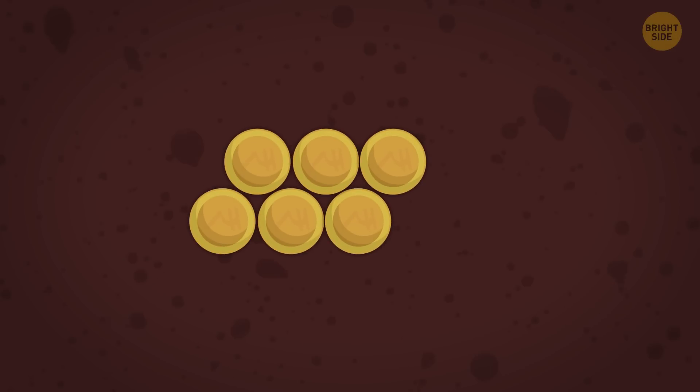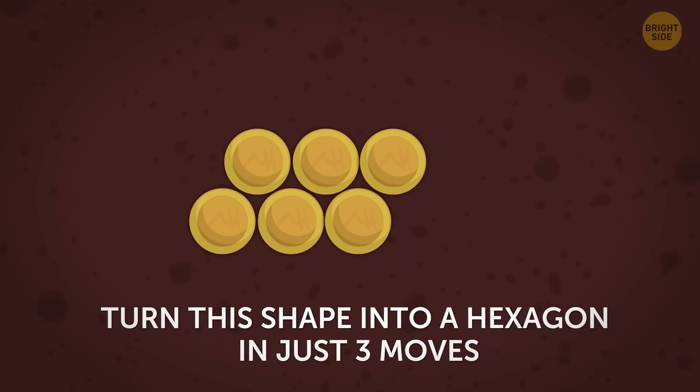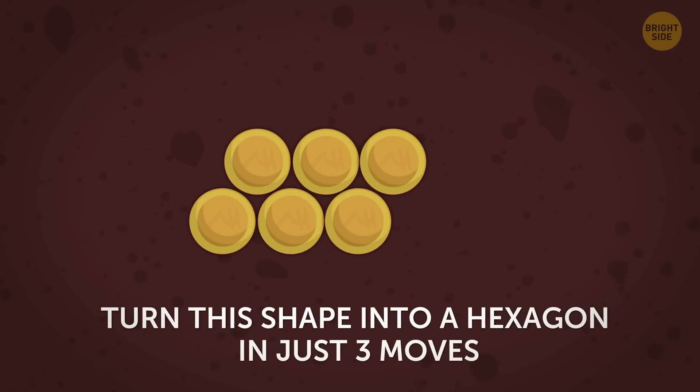We've arranged these 6 coins specially for you. Can you turn this shape into a hexagon in just 3 moves? Wait a minute. There's a catch. You can only slide a coin and put it in a place where it touches 2 others. And it shouldn't disturb other coins while moving.